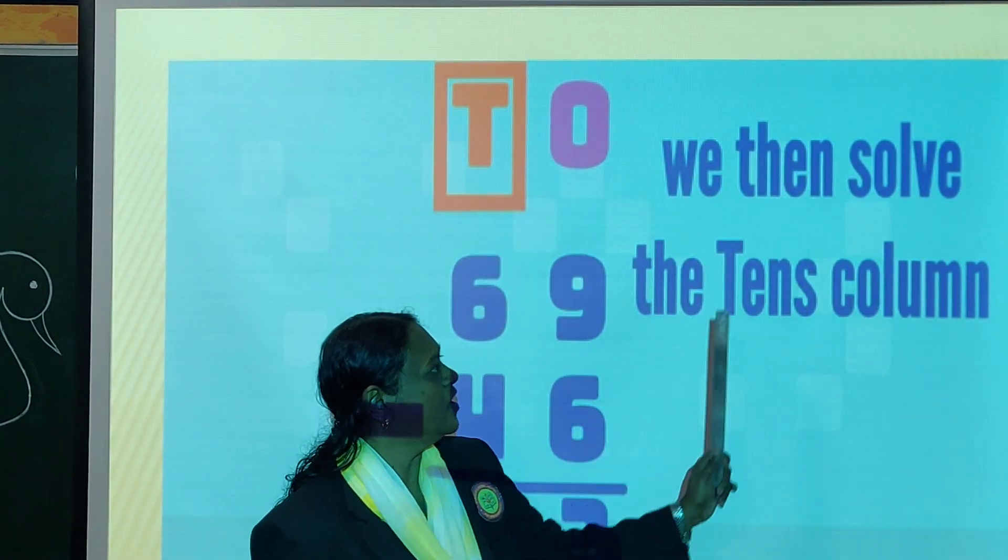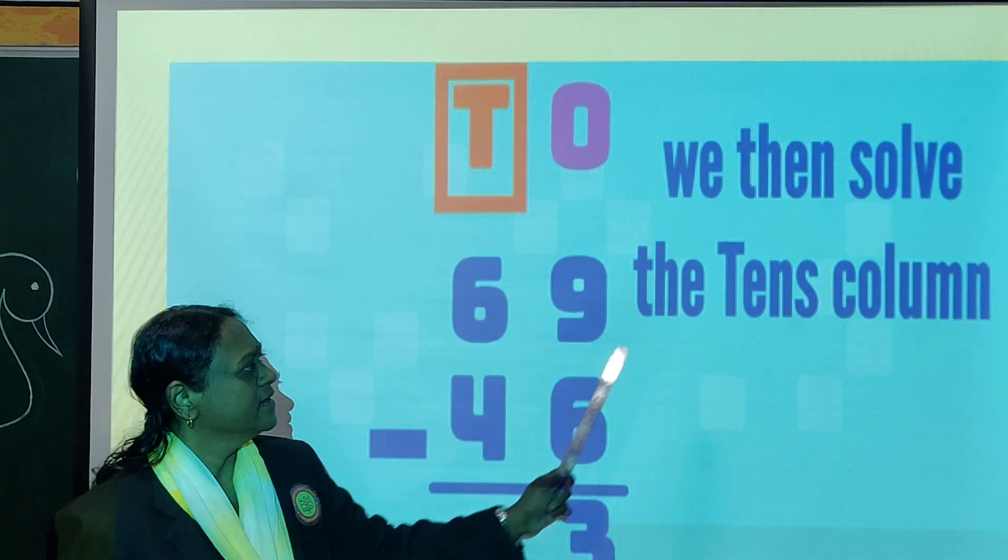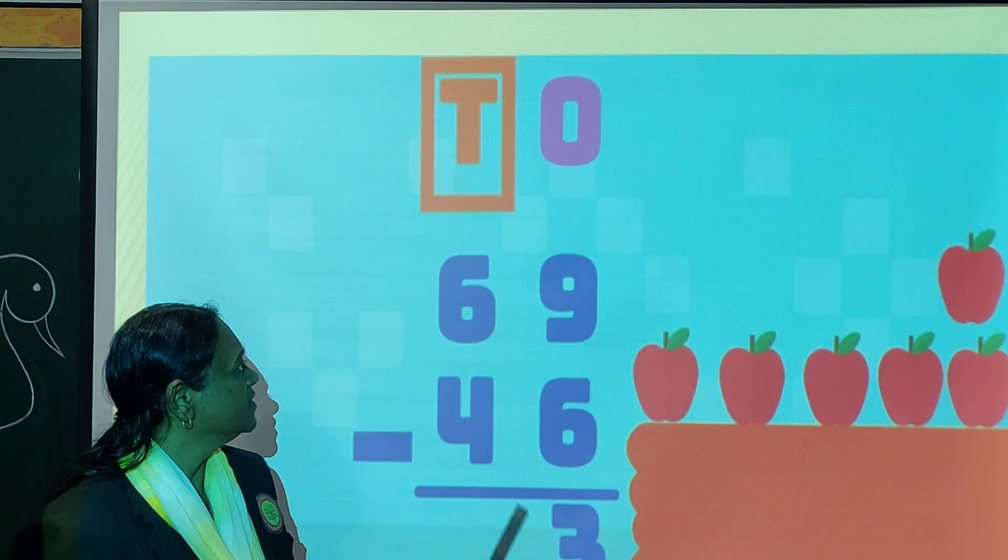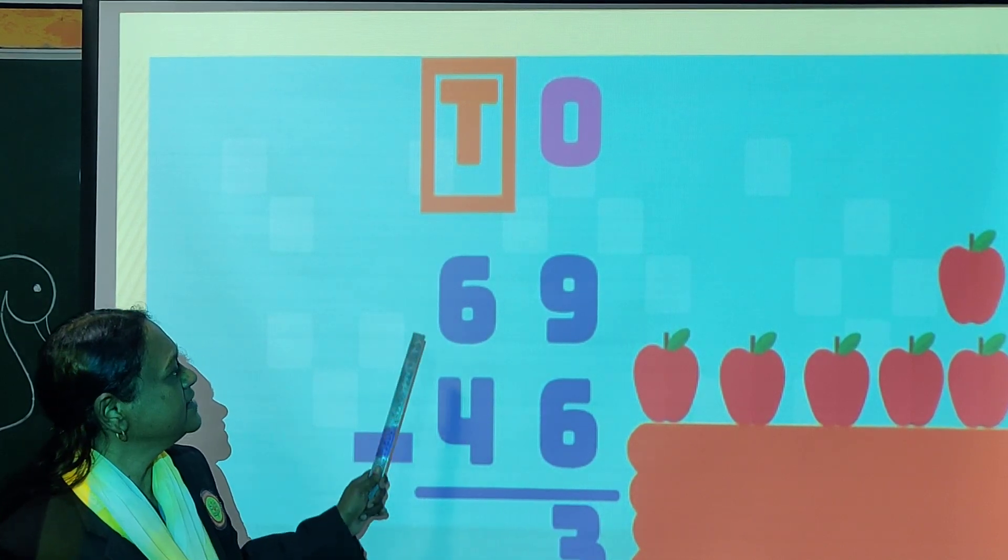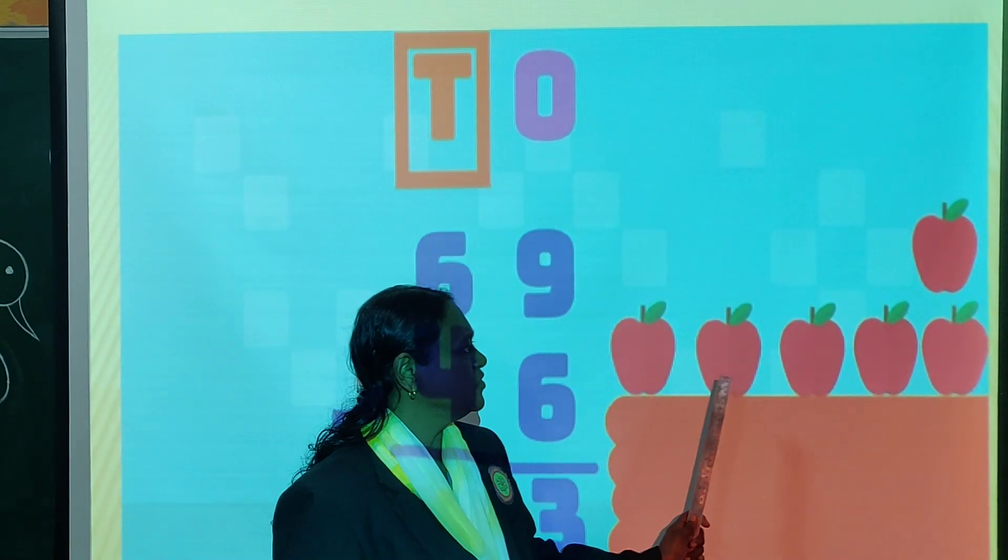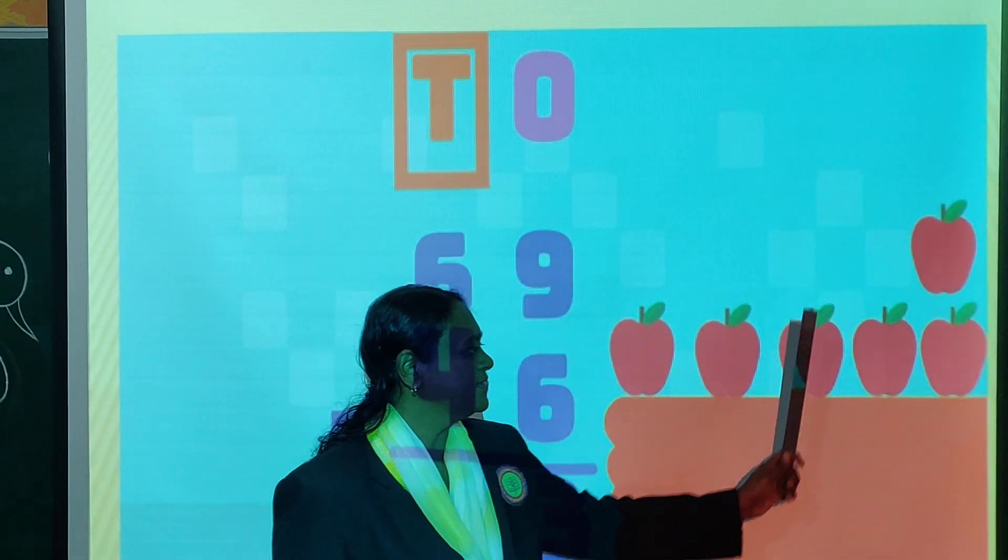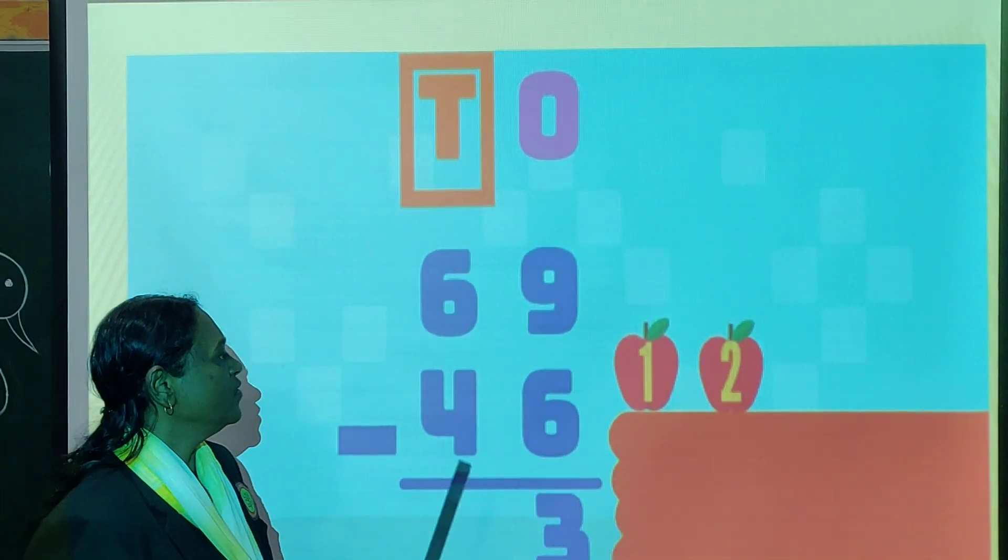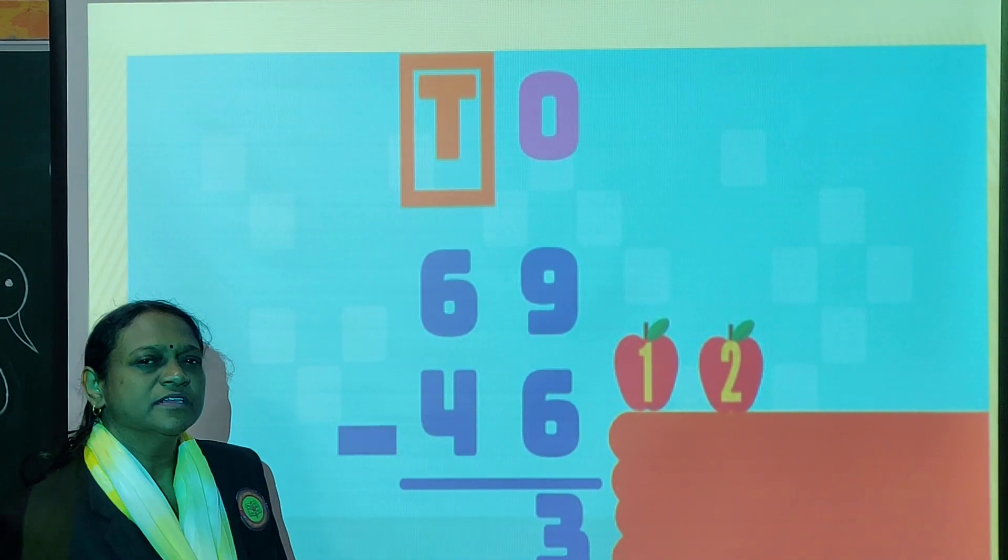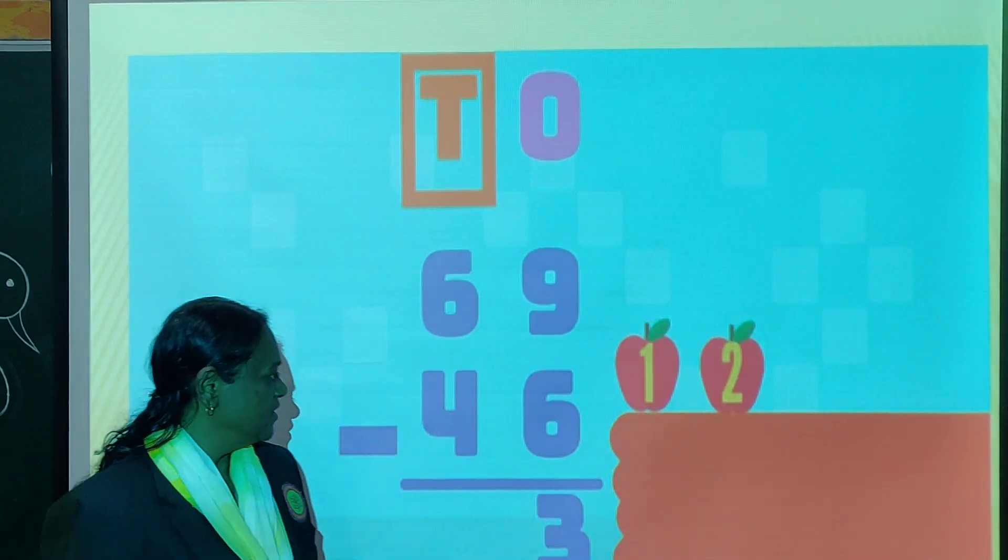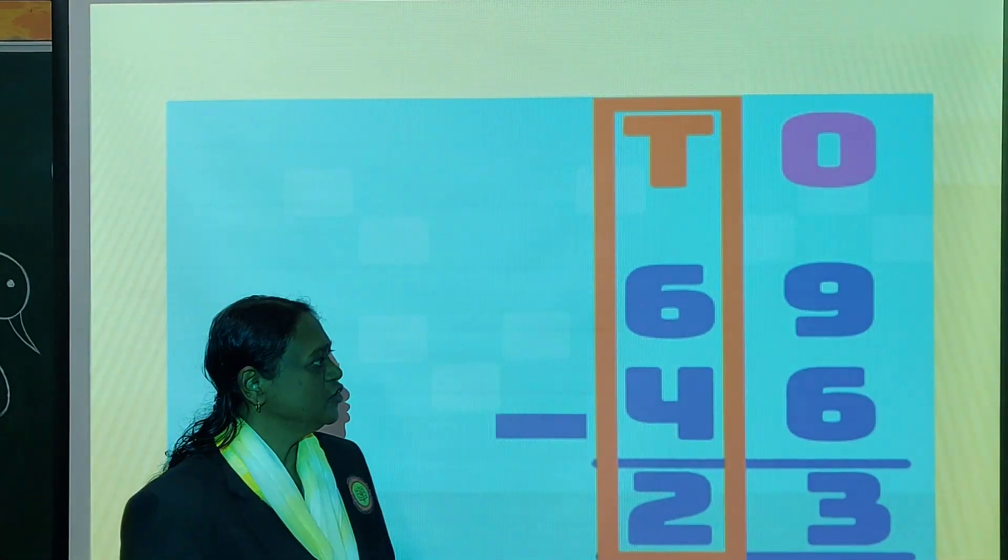When we solve, now tens. Now this is tens. Tens, 6 minus 4. Count 1, 2, 3, 4, 5, 6. This is 6 apples. Now we have to minus 4. So from 6, when we minus 4, the answer will be 1 and 2. So this tens side, we will write 2.